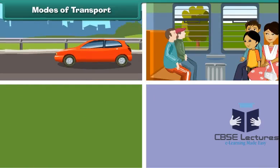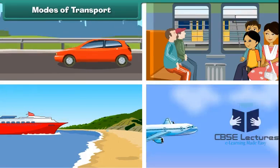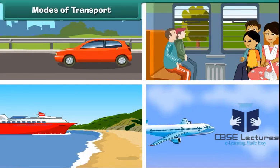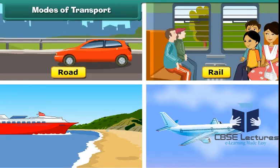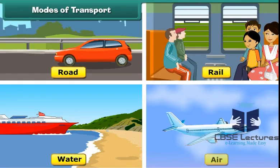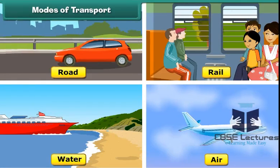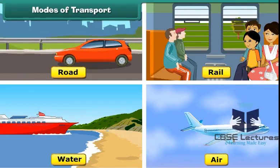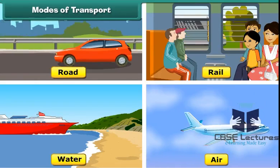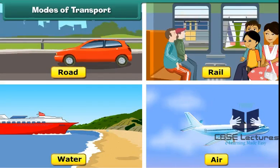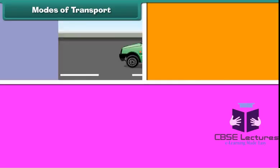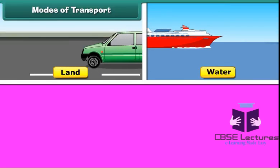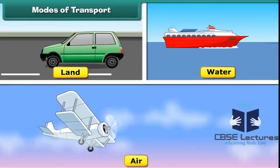Modes of Transport. Goods, animals and people can be transported by road, rail, water or air. Different mediums used for transportation are known as the modes of transport. Modes of transport can be broadly divided into three categories: land transport, water transport and air transport.